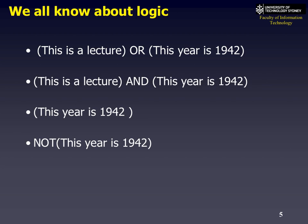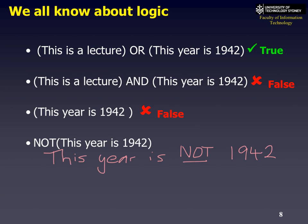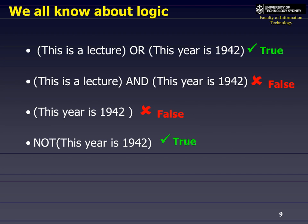Consider the statement: 'This is a lecture OR this is 1942.' That's true. But 'This is a lecture AND it is 1942' — the first part is true and the second is false. Because we can't time travel, the AND statement is false. Now the simple statement 'This year is 1942' is definitely false. And 'It is NOT 1942' — this year is not 1942 — is true, unless it happens to be 1942. That's an example of negation.